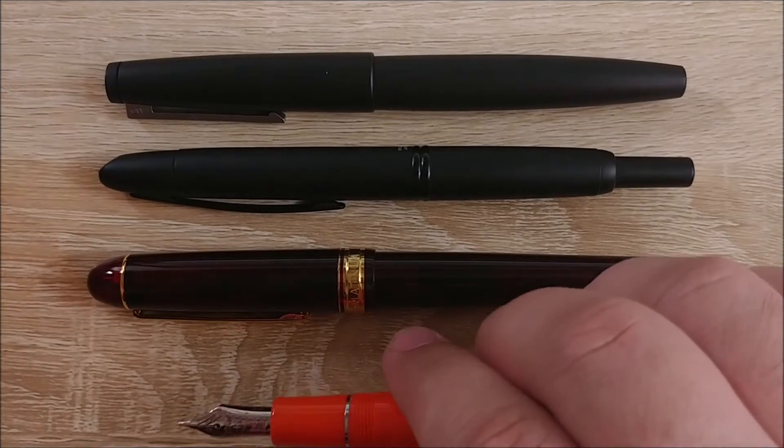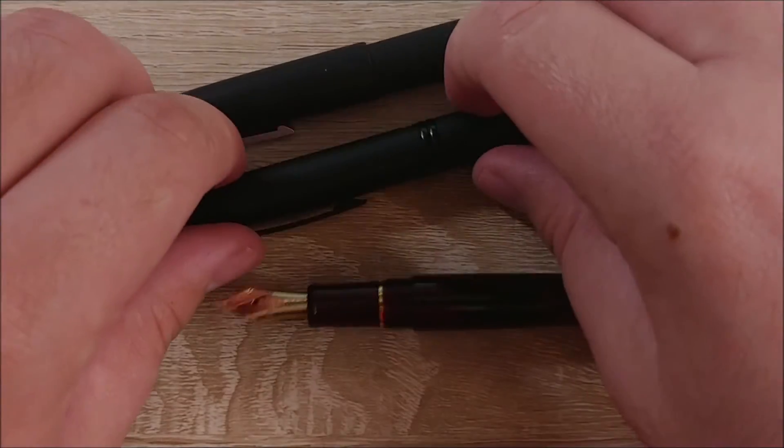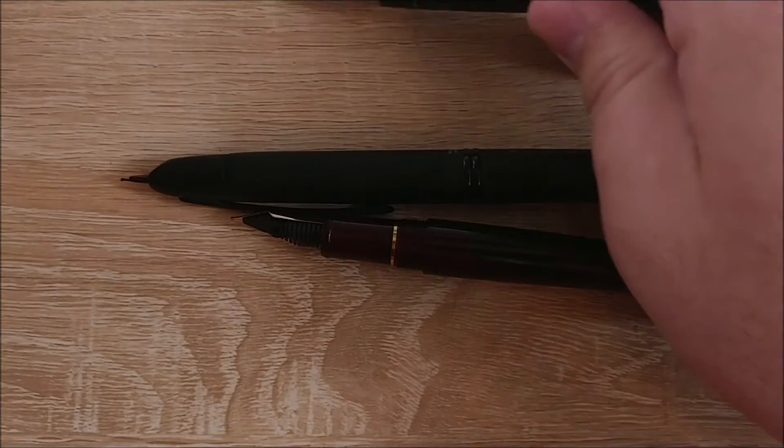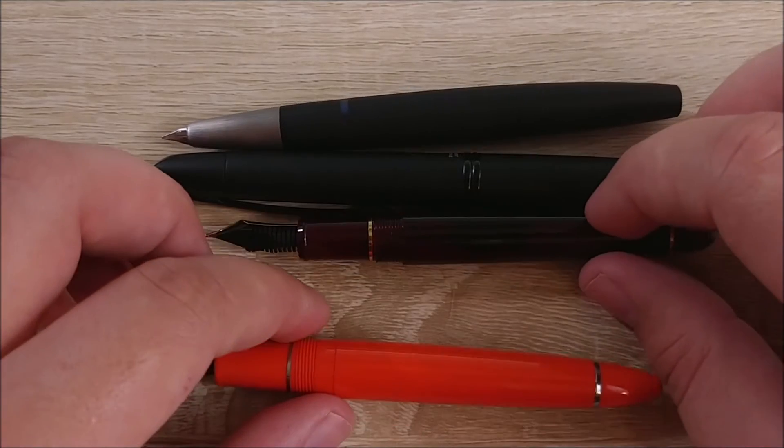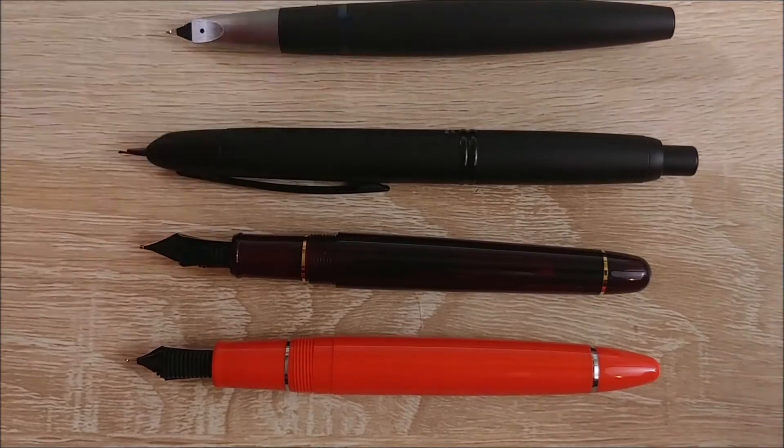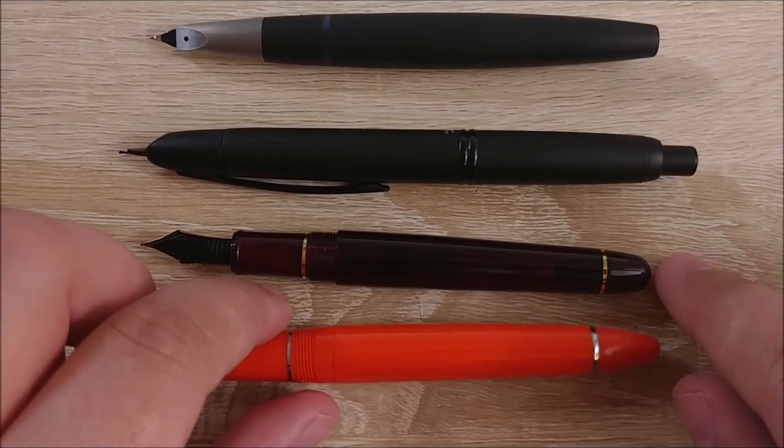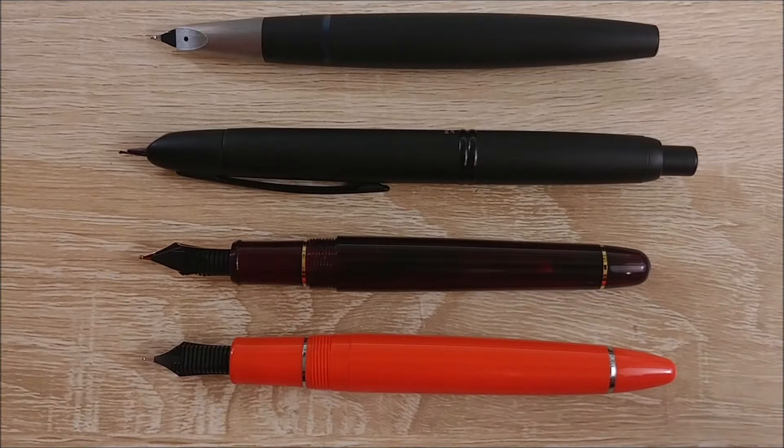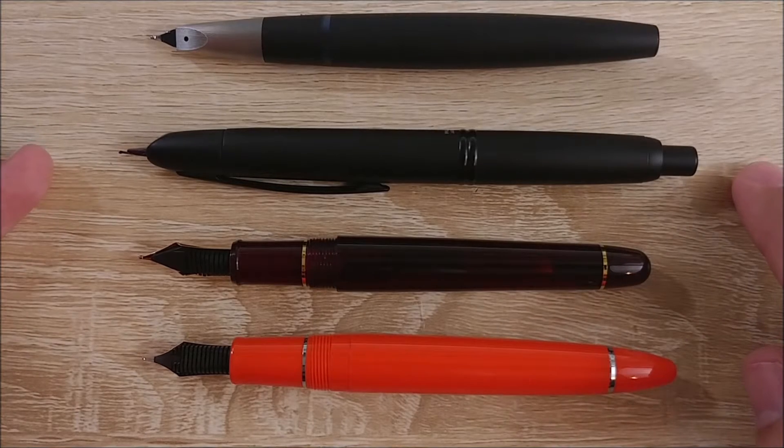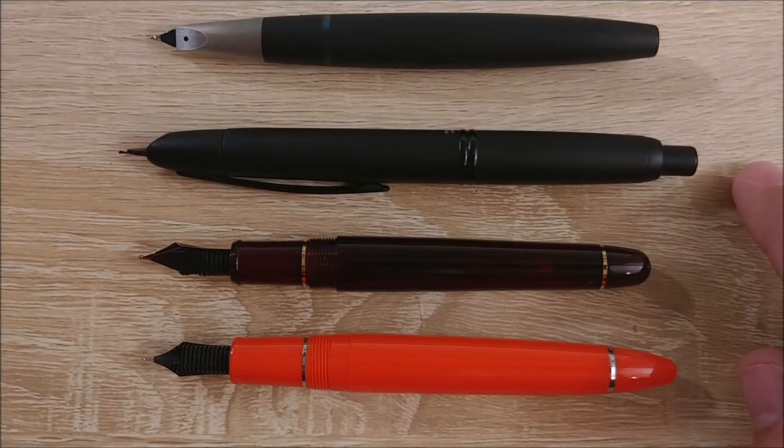So we're going to check out Uncapped Comparison. You can see that the Saylor is longer than the 3776. Not by a huge amount, but it is longer. The biggest thing you probably noticed, though, is the grip section is larger. It is shorter than the Vanishing Point, which is an exceptionally long pen, and it is longer than the Lamy 2000.